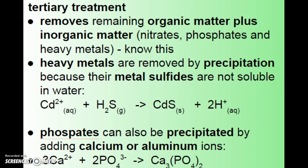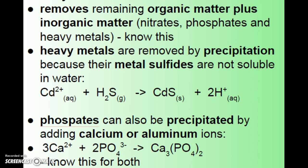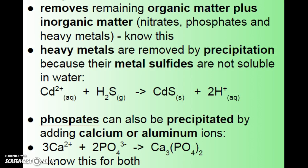Tertiary treatment removes inorganic matter plus any remaining organic matter. This is where nitrates, phosphates, and heavy metals are taken out. Heavy metals are removed by precipitation with dihydrogen sulfide — they react to form metal sulfides that settle to the bottom since they're heavy. Phosphates are also precipitated out by adding calcium and aluminum. Inorganic matter is generally made to react with compounds that cause it to precipitate out, and the remaining organic matter is typically removed with chlorine.